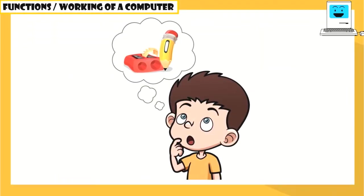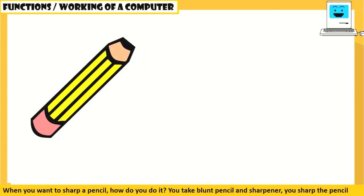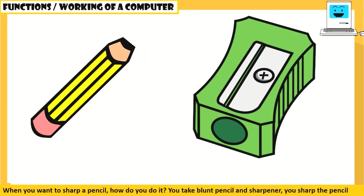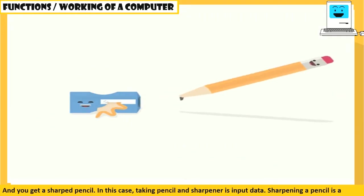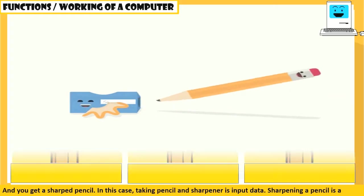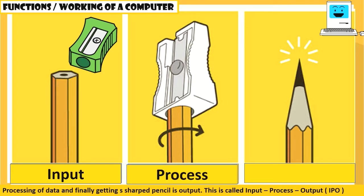Working of a computer. Children, when you want to sharpen a pencil, how do you do it? You take a blunt pencil and sharpener, you sharpen the pencil, and you get a sharp pencil. In this case, taking a pencil and sharpener is input data, sharpening a pencil is processing of data, and finally getting a sharp pencil is output.